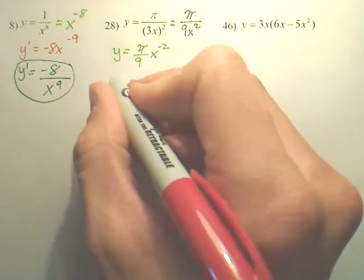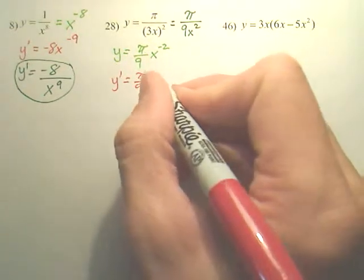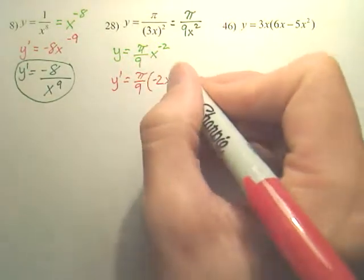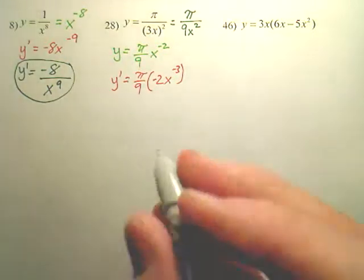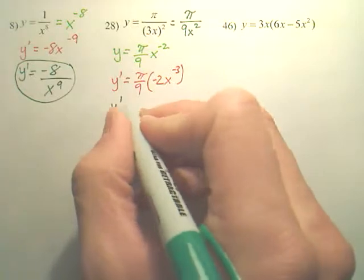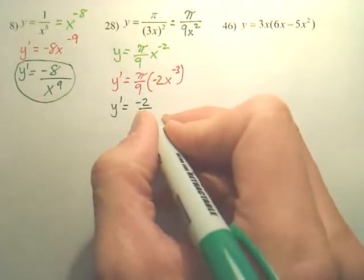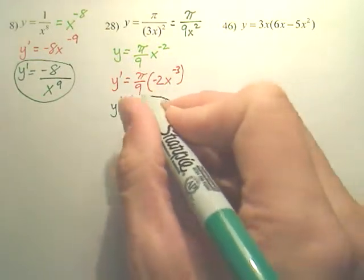Now I can derive it. So y prime is equal to pi over 9. The negative 2 jumps in front. I subtract 1 from that, so it becomes negative 3. That is my derivative, but I can still simplify that. So y prime, multiply this by negative 2, looks like we've got negative 2 over 9. And this negative power drops to the bottom, x to the third.